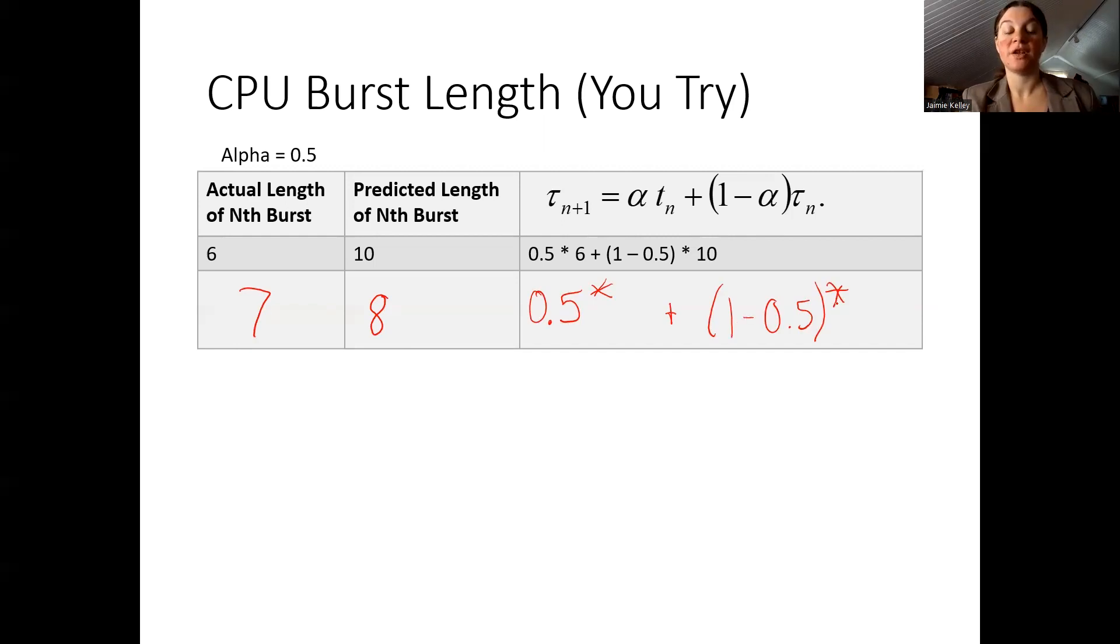So hopefully you got far enough that you're going to multiply 0.5 by something and then add it to 1 minus 0.5 times something. It's important to recognize which one of these is which. So the actual length of the nth burst is our t_n. And then when we have our predicted length, that is our tau_n. So we are going to be multiplying 0.5 times 7 plus 1 minus 0.5 times 8, which should give us our next predicted length of nth burst is 7.5.